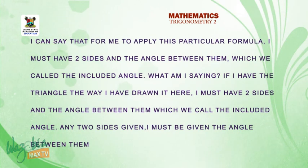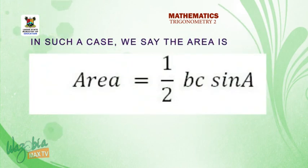So if I substitute that, the area will be equal to half C times B sine A. So that would be half BC sine A. Really, I can say that for me to apply this particular formula, I must have two sides and the angle between them. What am I saying? If I have the triangle the way I've drawn it here, I must have two sides and the angle between them, which we call the included angle. Any two sides given, they must give me the angle between them to be able to use this formula.